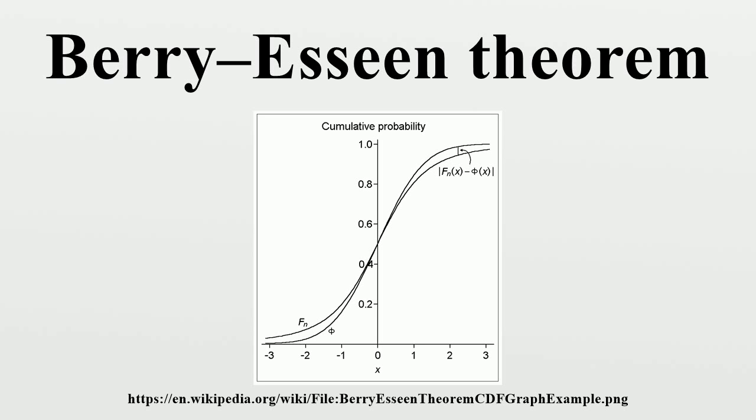Statement of the theorem varies, as it was independently discovered by two mathematicians, Andrew C. Berry and Carl Gustav Esseen, who then, along with other authors, refined it repeatedly over subsequent decades.